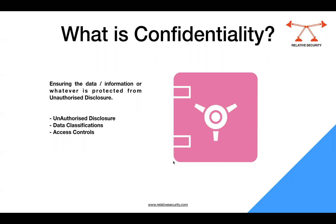Once you have classified your data, you put necessary access controls based on your classification. For example, for top secret data you will have the top-notch access controls — nobody unless authorized should be able to access it. Public information will have the least access controls, and private and secret will have all the necessary access controls depending on their level.